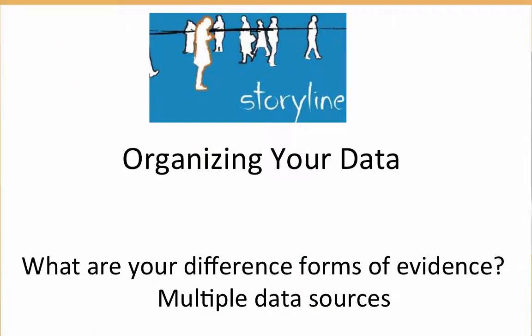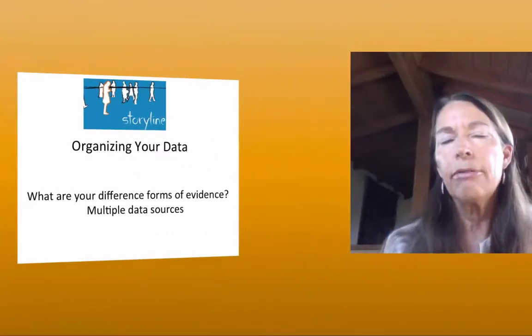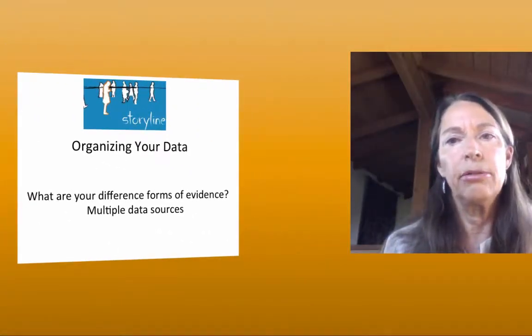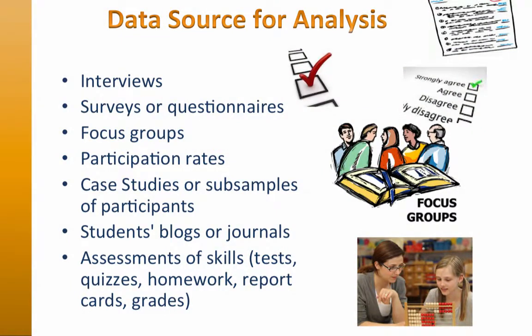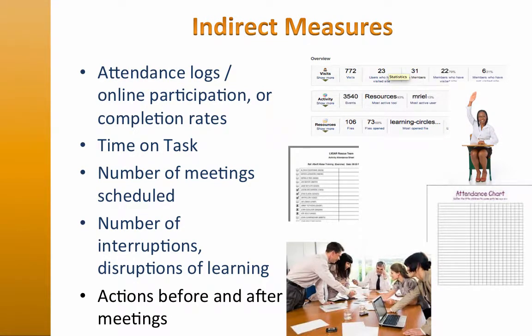Let's talk about organizing your data to find your storyline. Organizing your data will depend on what data you have collected. You might have participation rates, attendance rates, time on tasks, questions on surveys, test scores, or observational notes. Sometimes action researchers overlook important sources of data — they think that only surveys count. But indirect measures such as how many people came to a meeting, how long they stay after to discuss ideas, changes in attendance records, or action items discussed can all serve as meaningful evidence.